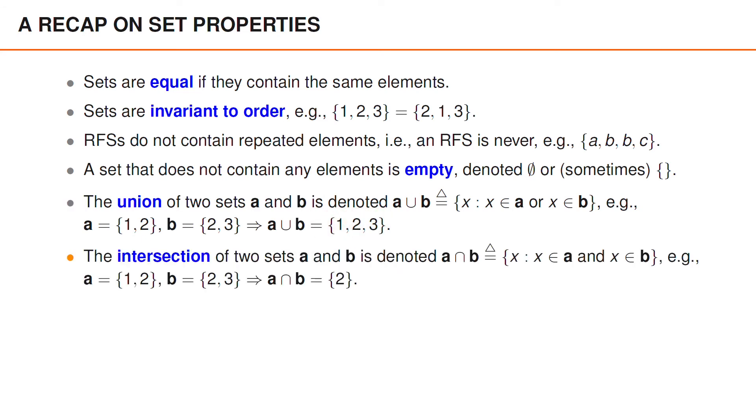The intersection of two sets, a and b, is the set of all elements that are in both a and b, and is denoted as follows. As an example, if a contains 1 and 2, whereas b contains 2 and 3, the intersection between the two sets is a set that only contains the element 2.